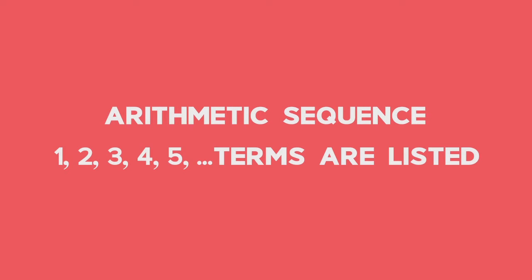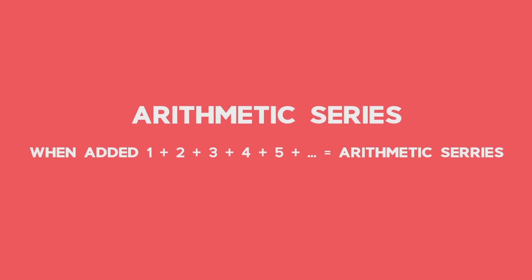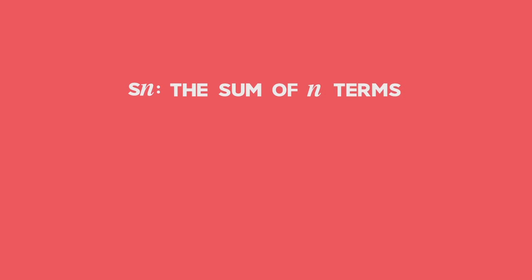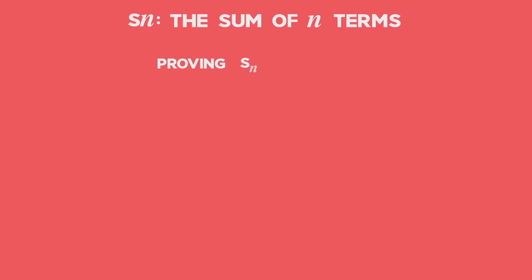When the terms of an arithmetic sequence are added, the resulting sum is known as an arithmetic series. We can prove that Sn, the sum of n terms, can be calculated using the following formula: Sn is equal to half n into A plus L, where L is the last term of the sequence.